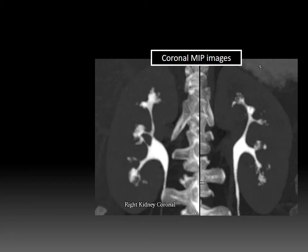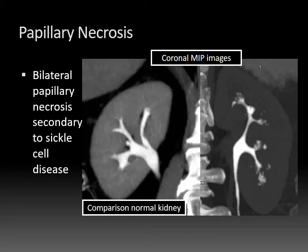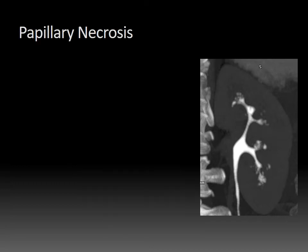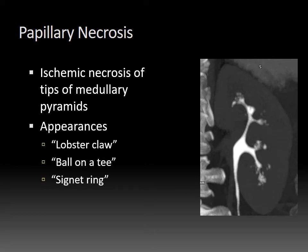CT urography is also excellent at detecting collecting system abnormalities. This is a patient with bilateral coronal MIP images showing marked distortion of the calyces, typical for papillary necrosis — in this case secondary to sickle cell disease. For comparison, here's a normal coronal MIP of a different kidney showing normal calyceal architecture, including the normal cupping of the minor calyx around the medullary pyramid apex and normal fornices. Papillary necrosis is ischemic necrosis involving the tips of the medullary pyramids. As the papilla becomes ischemic, part of it may slough off into the collecting system, leaving a void that fills with contrast and distorts calyceal architecture. This has a variety of appearances described as lobster claw, ball and a T, and signet ring.